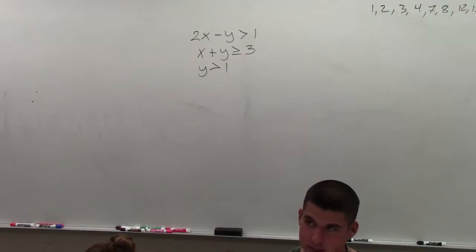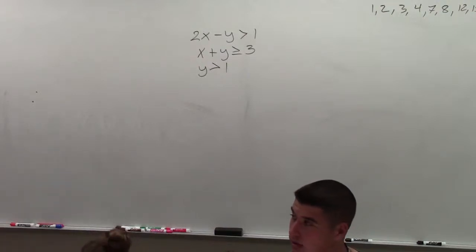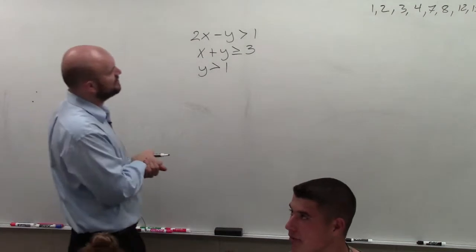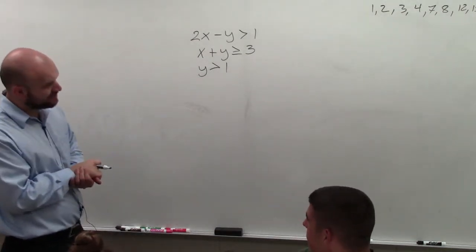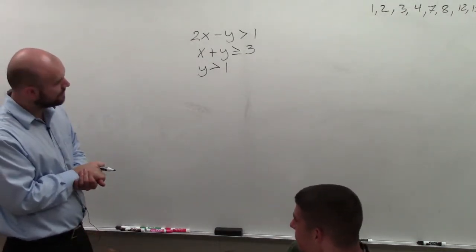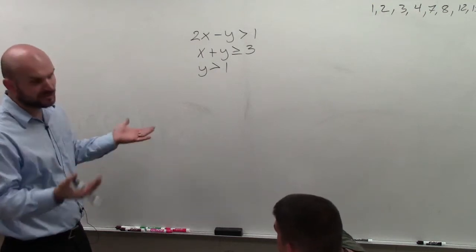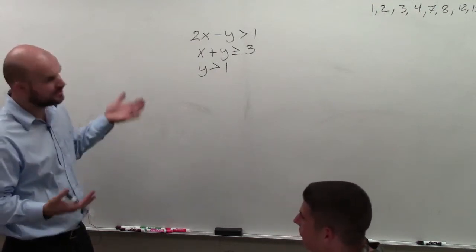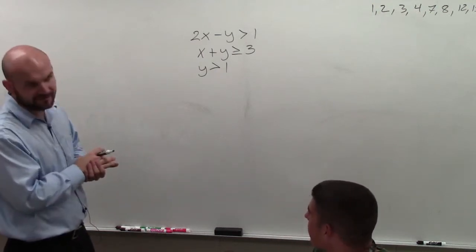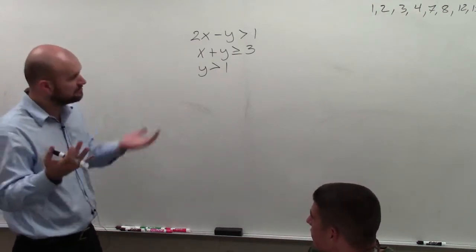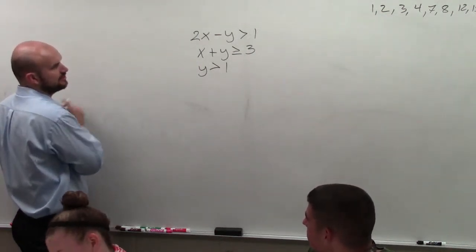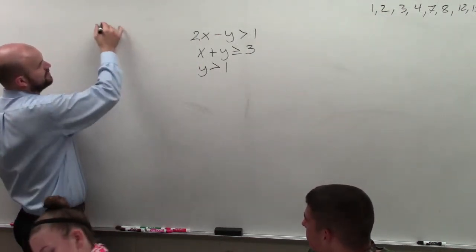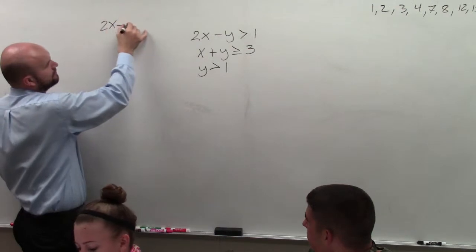In this example, we're going to be graphing each one of these inequalities separately. These are just like graphing linear inequalities — they're the same. The easiest thing to do would be to write each one of these in slope-intercept form.